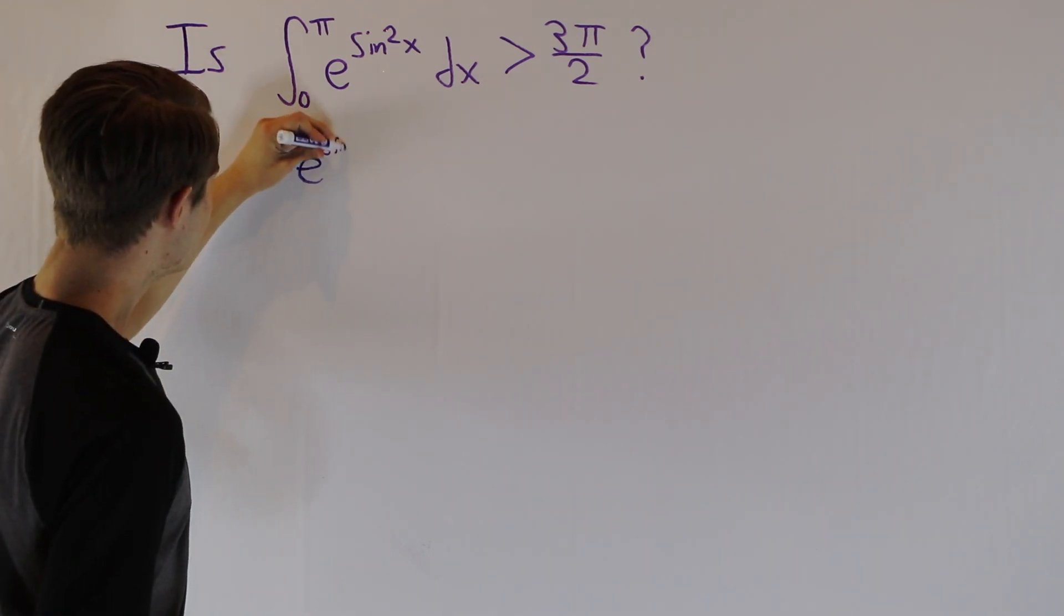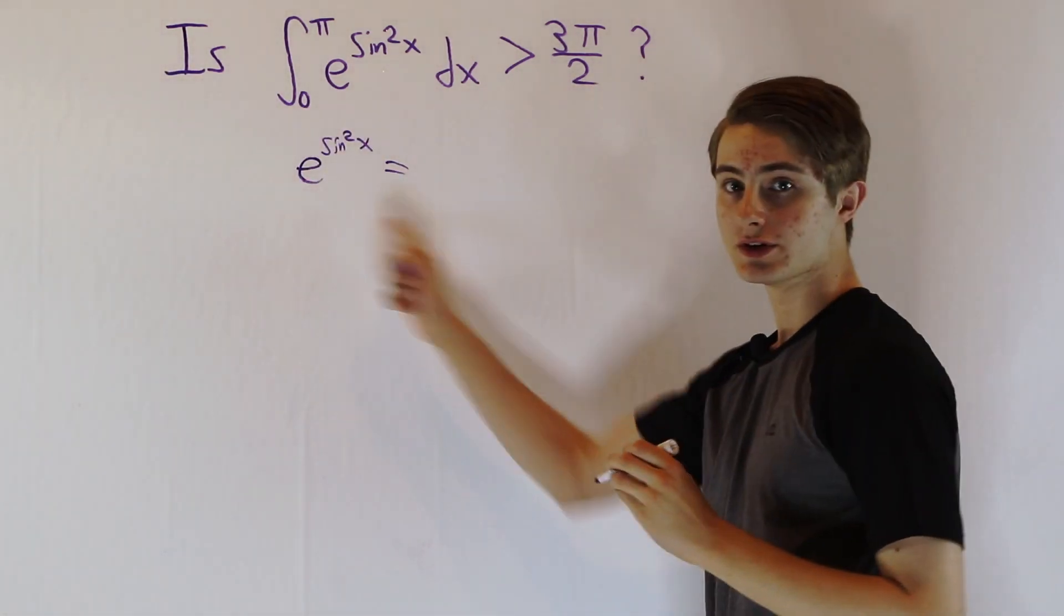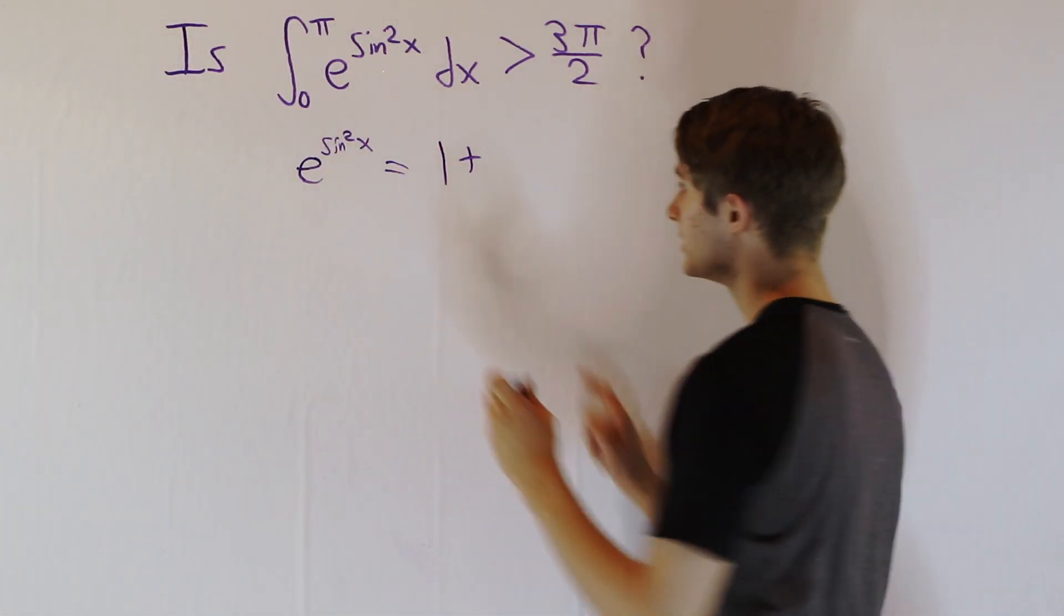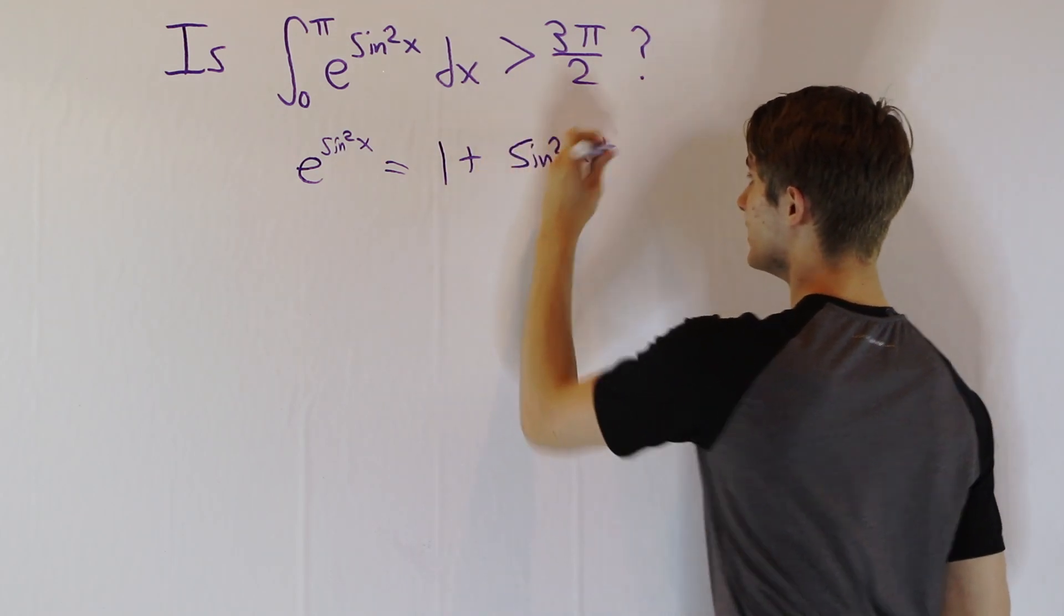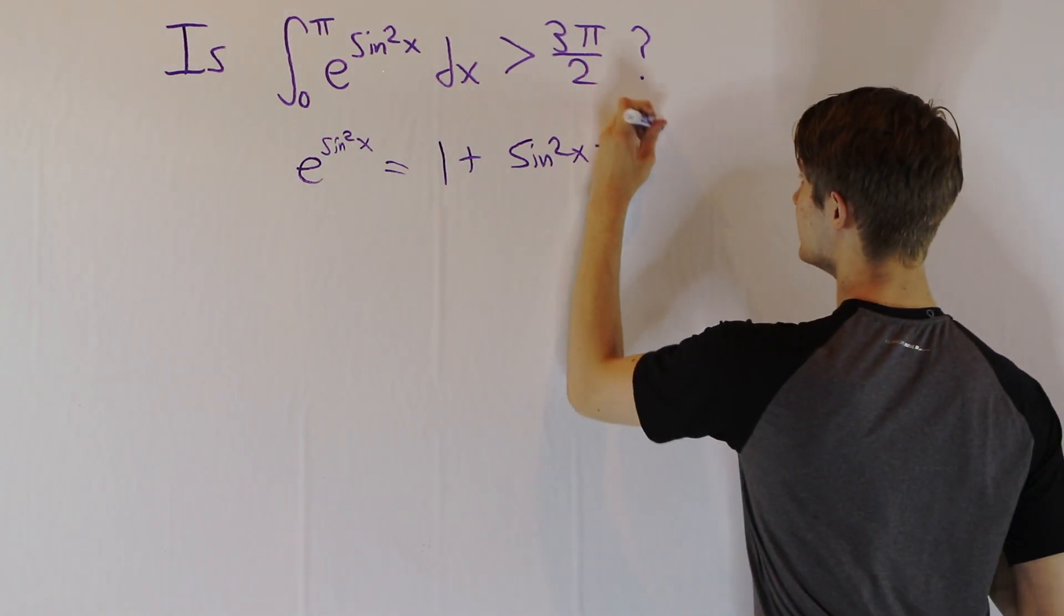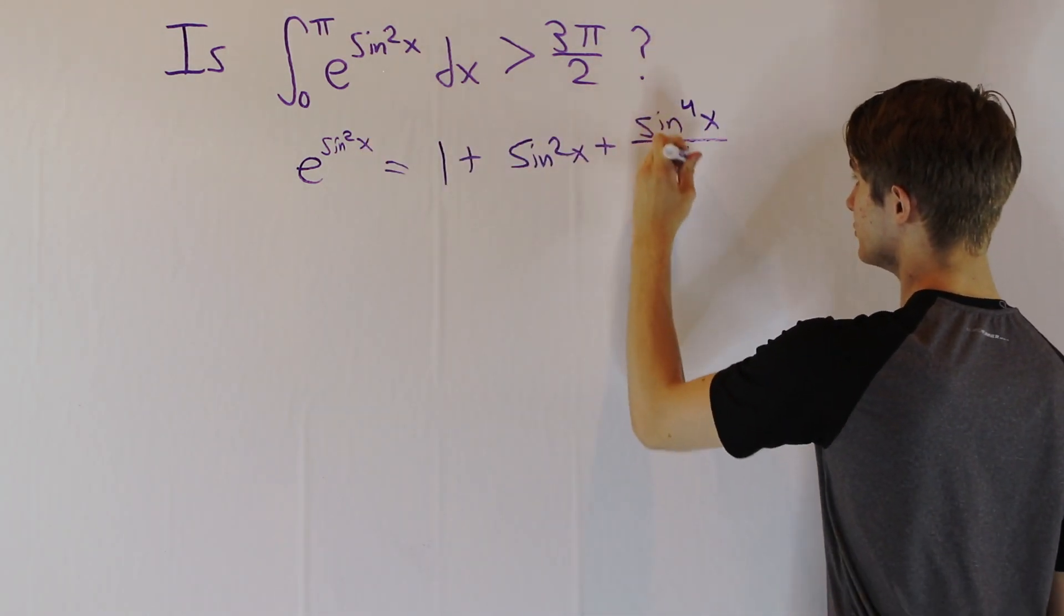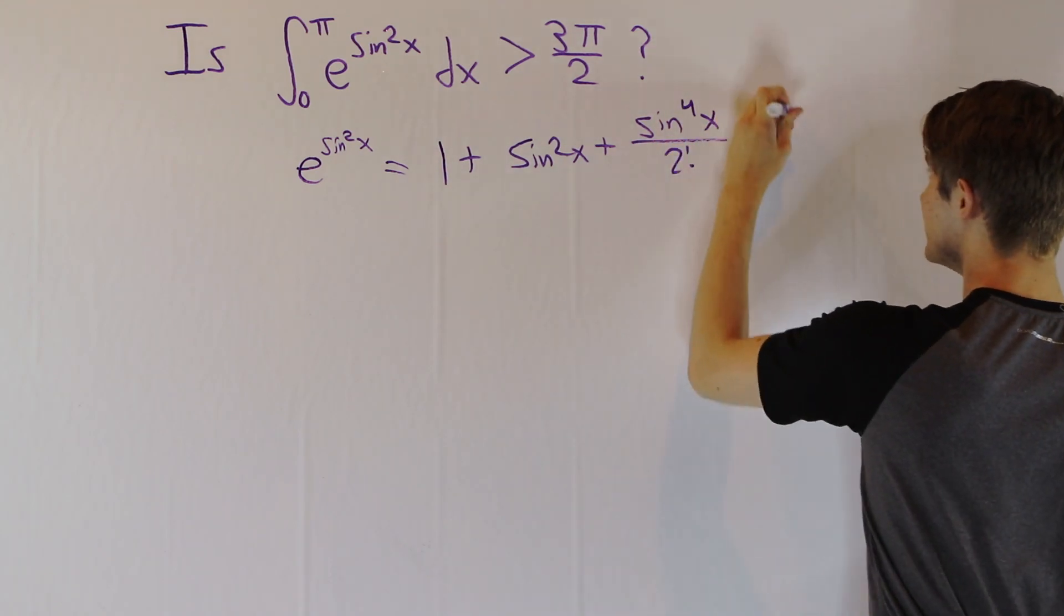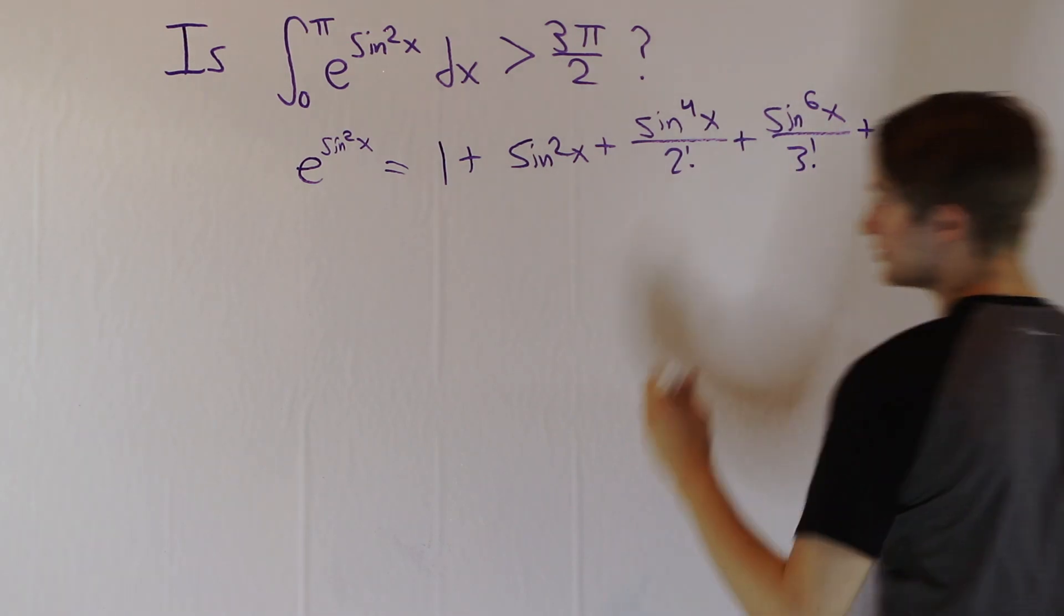We know e to the sine squared x is going to equal, well first we get 1, then we get plus whatever our input is, sine squared x, then after that we get this input squared over 2 factorial, so sine squared x squared is sine to the fourth x over 2 factorial, plus next is sine to the sixth x over 3 factorial, and so on.